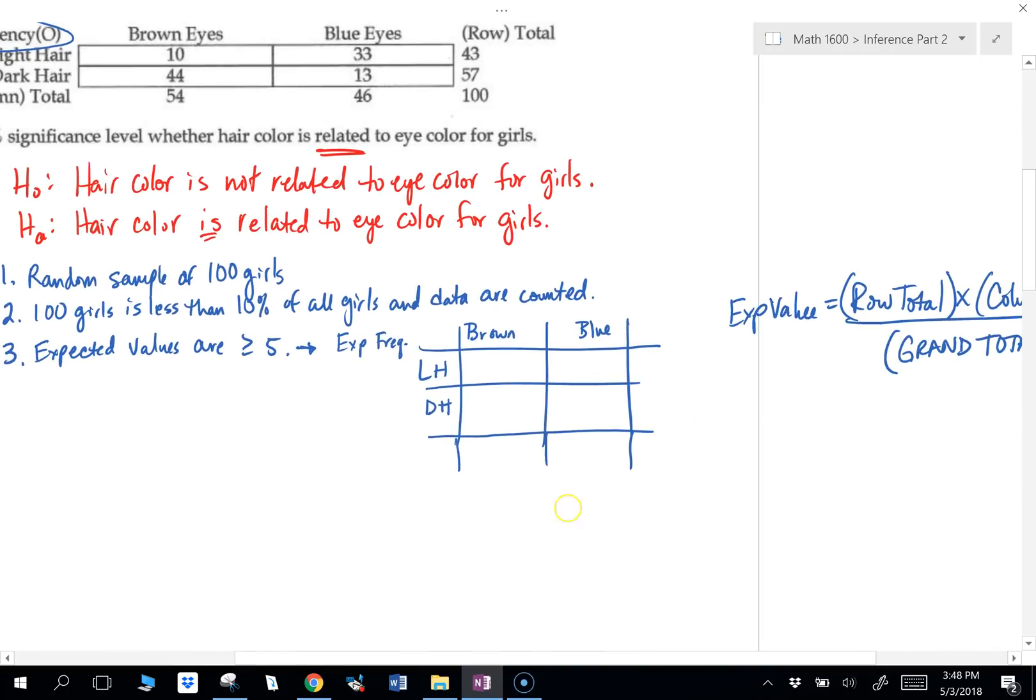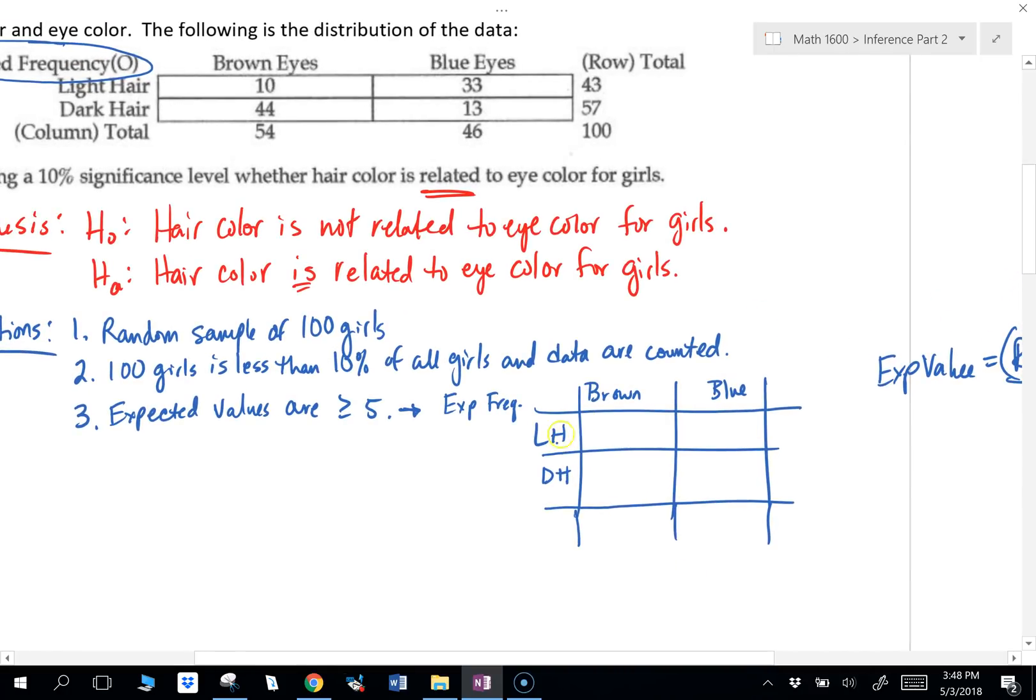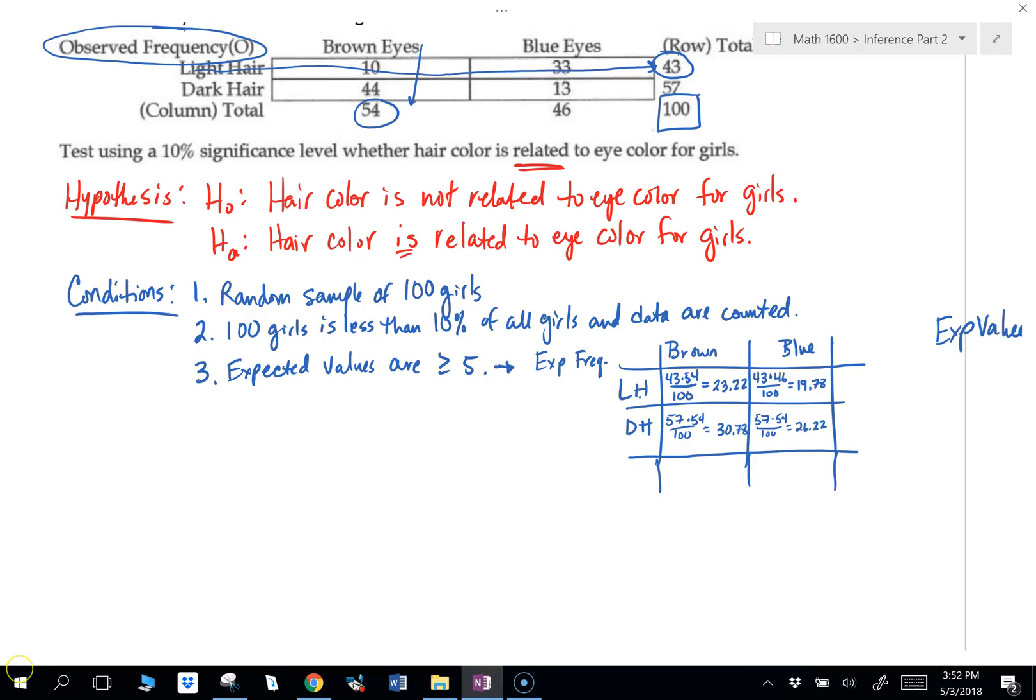Okay. So for instance, for light hair, for light hair brown eyes. We're going to go up to our table. Light hair has a row total of 43. Brown eyes has a column total of 54. So I'm going to do 43 times 54 divided by the grand total, which in this case was 100. And that's going to be my expected value. So go ahead right now and calculate the rest of the expected values using the same method I just did.